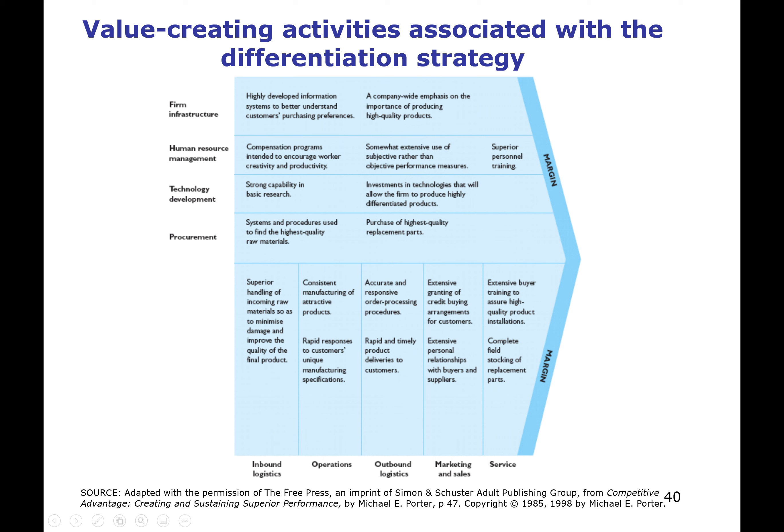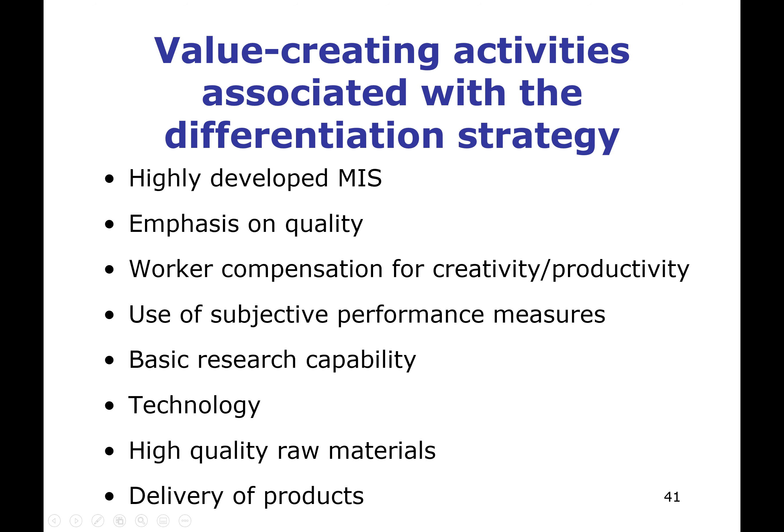This slide, just like the last slide from the previous section, is an important slide. What value-creating activities are there in our value chain that will create a differentiated product? Normally, firms have highly developed management information systems because they need to know what the customer wants and have strong linkages. Differentiated products tend to have an emphasis on quality rather than price, compensating and supporting through human resource management to support creativity and productivity, as distinct from cost reduction.